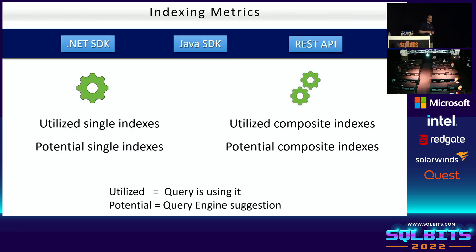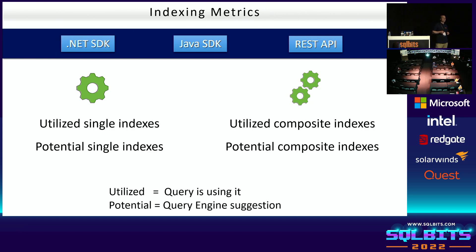Index metrics is a recently introduced feature — like SQL Server's index suggestions. It's available in .NET, Java, and REST API. When enabled, it gives four results: utilized single indexes (what indexes you're currently using), potential single indexes (suggestions from Cosmos DB), utilized composite indexes, and potential composite indexes. Don't enable this in production for every query. Instead, find an expensive query from Azure portal logs, take that specific query, add the 'x-ms-documentdb-populateindexmetrics' header, and review the suggestions. Then test them in a test environment before applying.